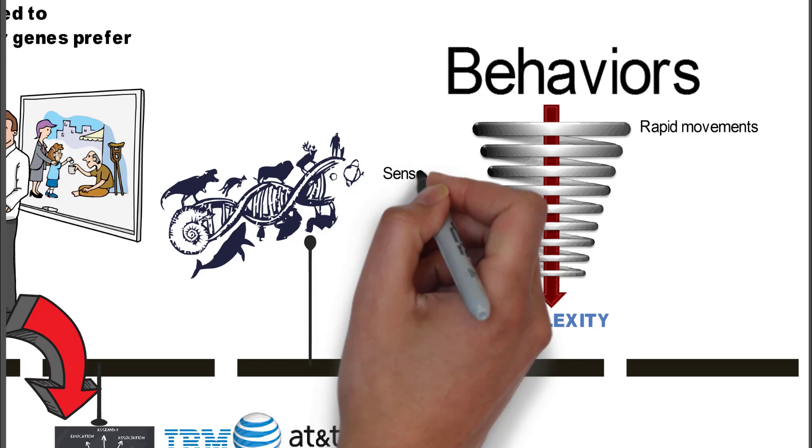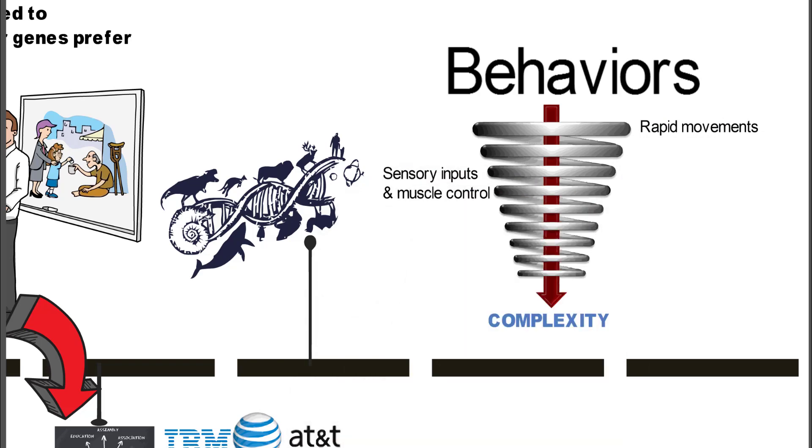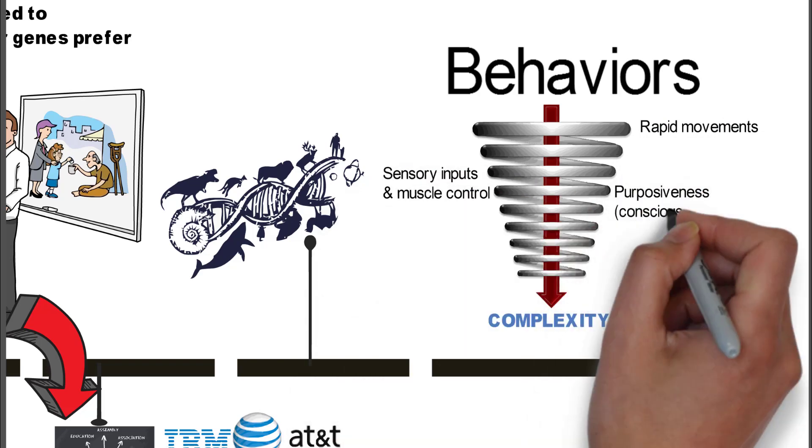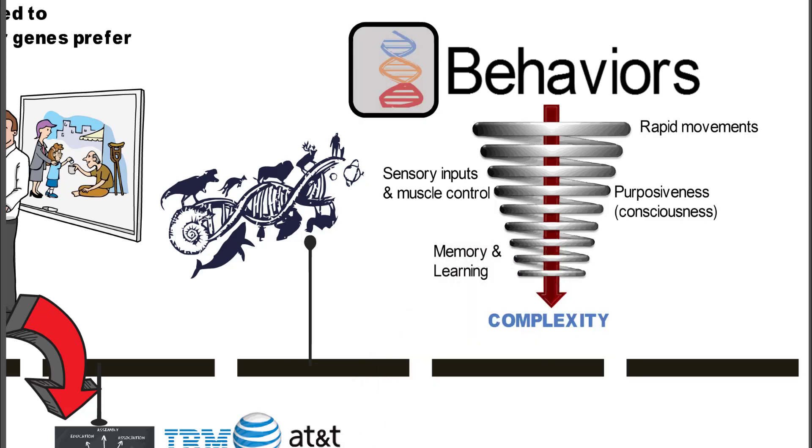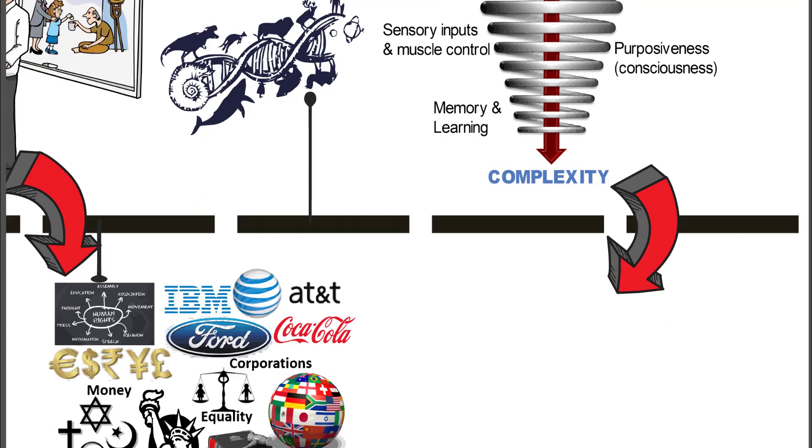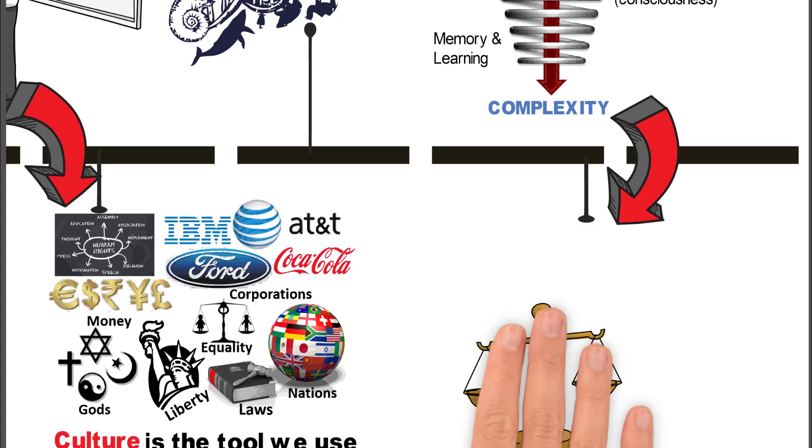One of those is rapid movements. Another one was sensory inputs and muscle control. And then this purposefulness or consciousness. And then memory and learning. And the DNA, again, was a very big winning strategy or a winning tool for that strategy.